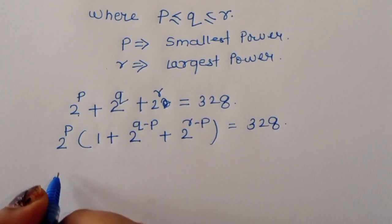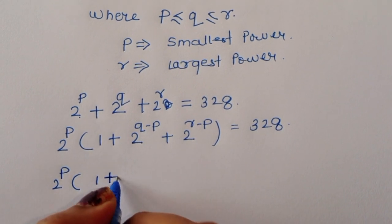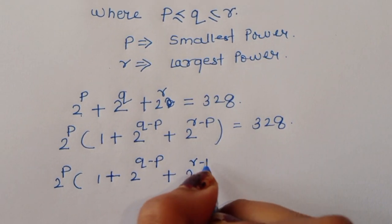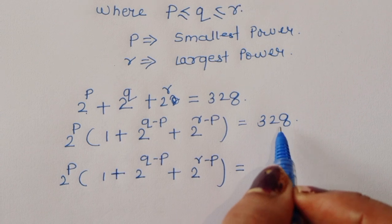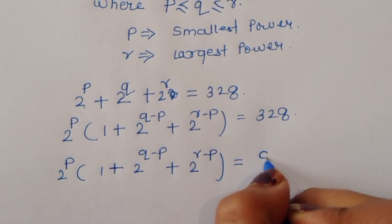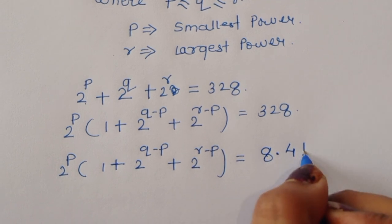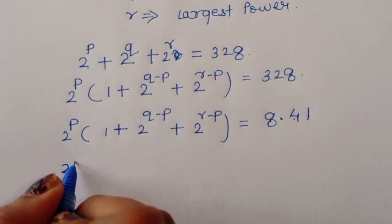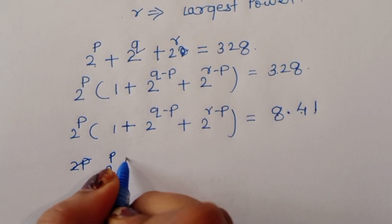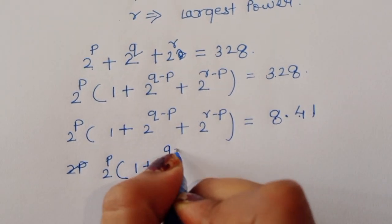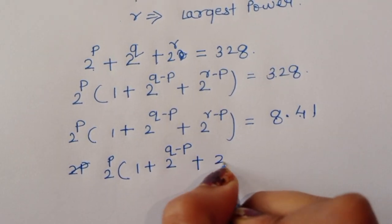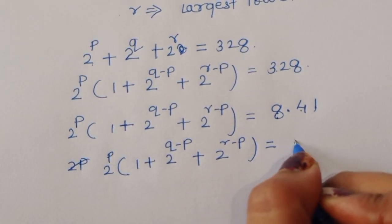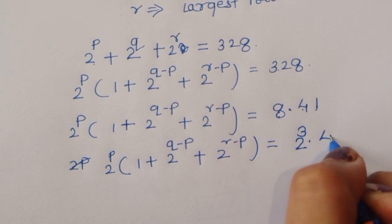Now we factor 328. We can write 328 = 8 × 41 = 2^3 × 41. So the equation becomes 2^P × (1 + 2^(Q−P) + 2^(R−P)) = 2^3 × 41.